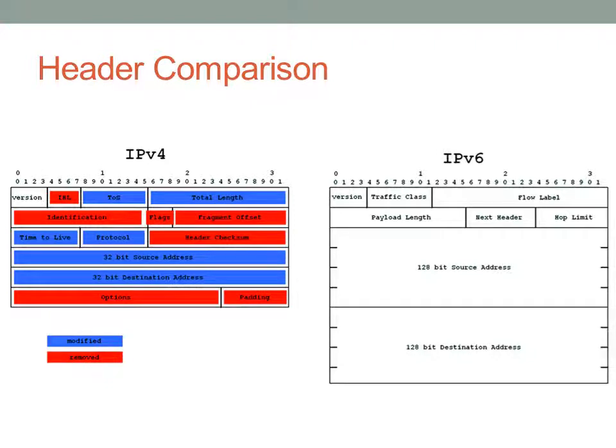Routing is typically sub-second, so rather than worrying about seconds, we renamed it to what it actually is — a hop limit. Then we have the source and destination addresses.